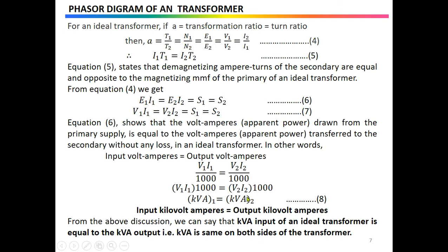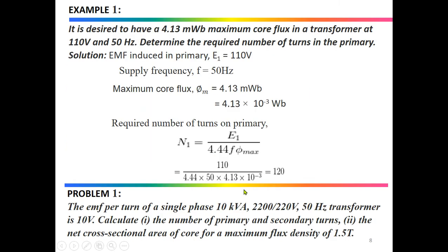It is important to note that the primary and secondary currents are inversely proportional to their respective turns. For EMFs and voltages they are directly proportional to the number of turns, but for current it is inversely proportional — as the number of turns increases, the length of wire increases, creating more impedance, and the current decreases.